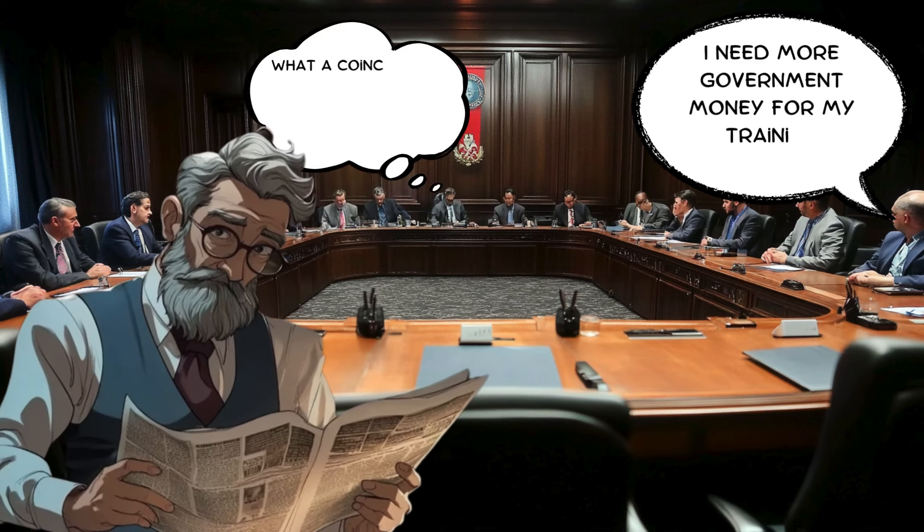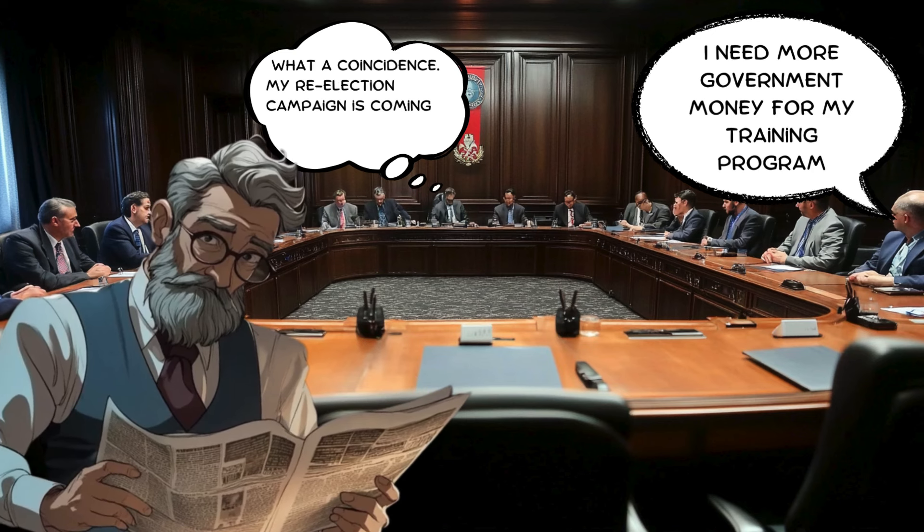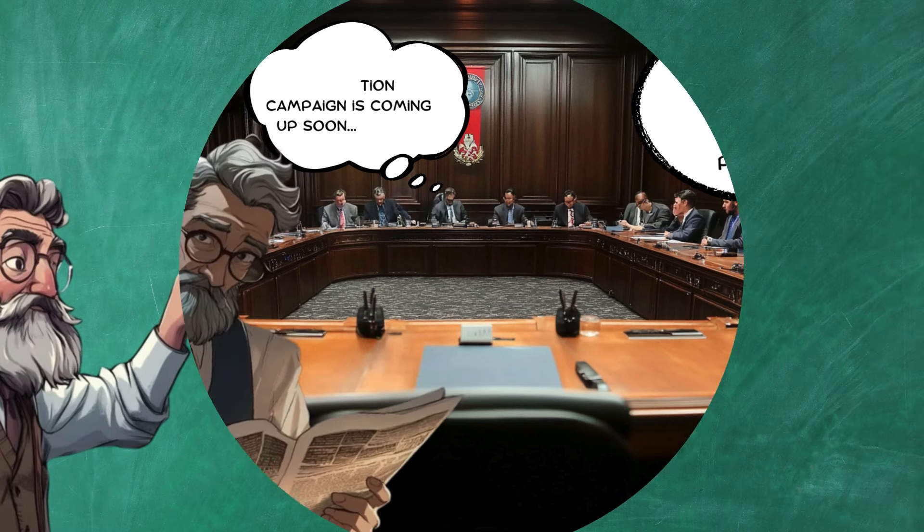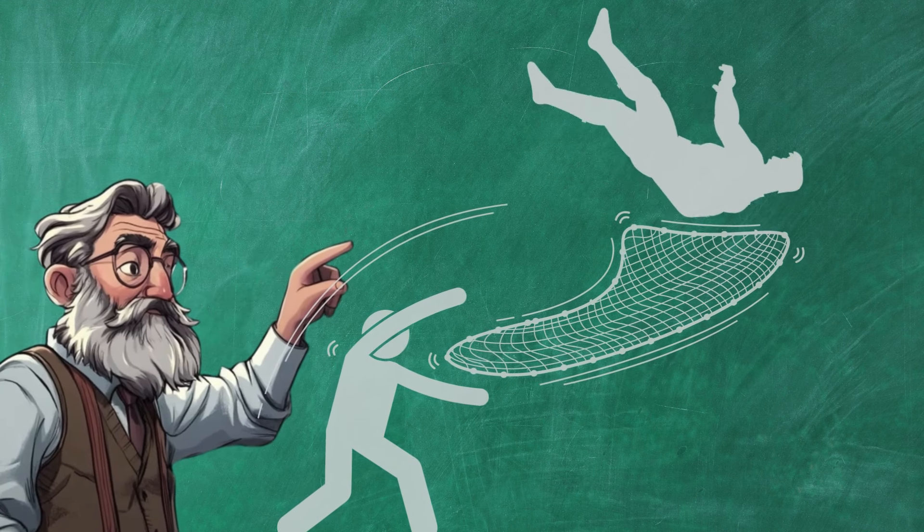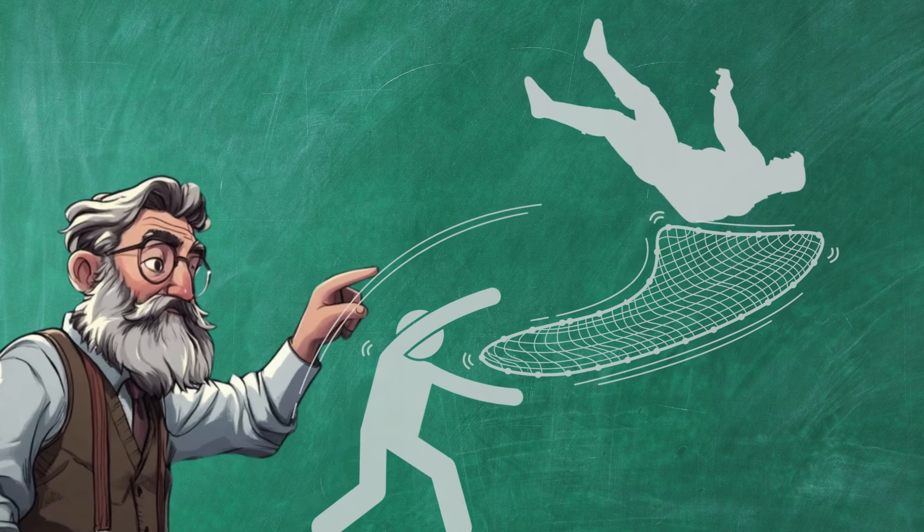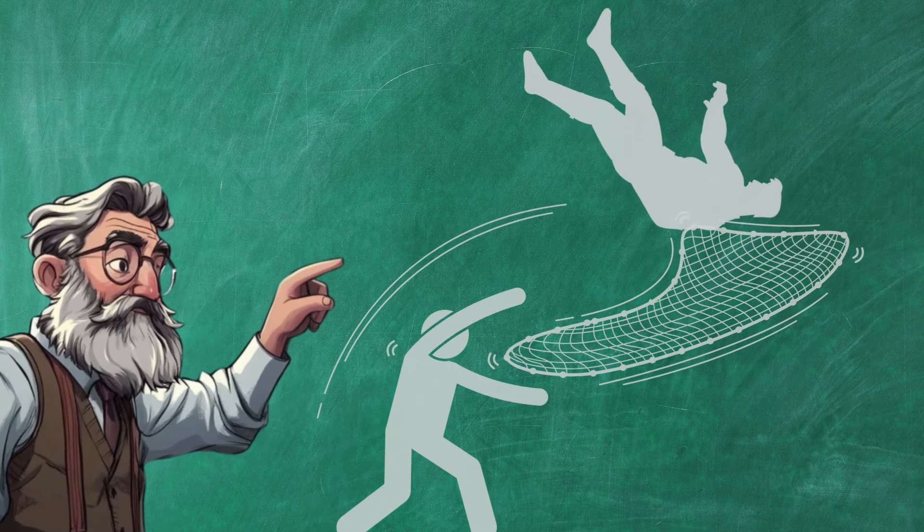This includes lifelong learning initiatives and accessible and affordable retraining programs. They also think that strengthening social safety nets like unemployment benefits and healthcare access is crucial to provide security for workers during transitions.